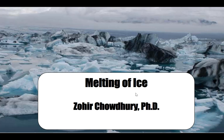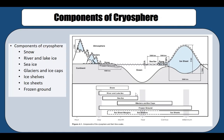Hello everybody, my name is Zohir Chodri. Today's topic is about melting of the ice. The various components of ice together are known as the cryosphere — just like the biosphere and lithosphere, the cryosphere refers to all components on the globe made up of ice: snow, river and lake ice, sea ice, glaciers and ice caps, ice shelves, ice sheets, and frozen ground.